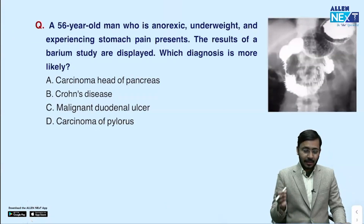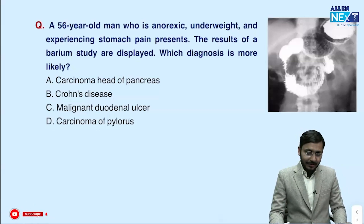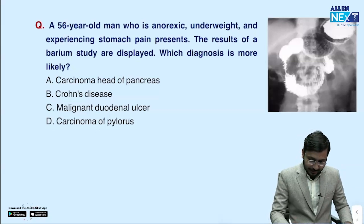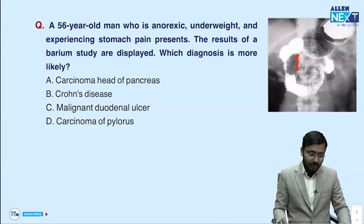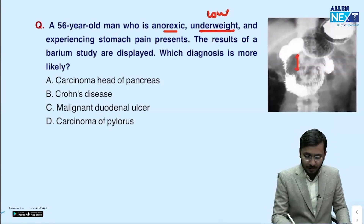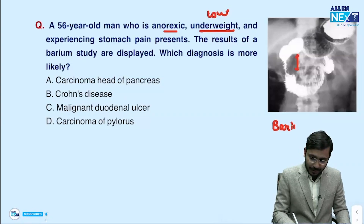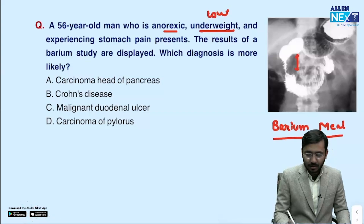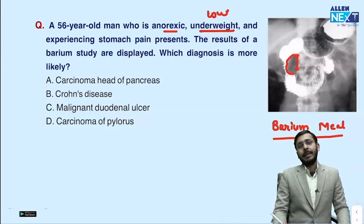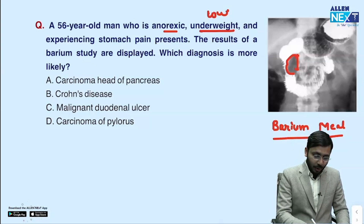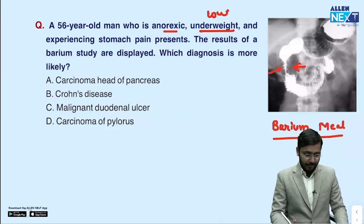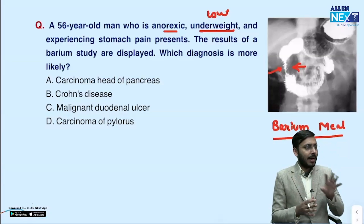The second question: a 56-year-old man who is anorexic, underweight, and experiencing stomach pain presents. The result of the barium study is displayed. Looking at the barium study, we see widening of the C-loop. The patient has anorexia and weight loss, so there might be cancer or granulomatous disease. On this barium meal we are seeing the stomach and the duodenum. We see widening of the C-loop of duodenum and an impression on the medial wall of the second part, with narrowing. We suspect a mass in the head of the pancreas.